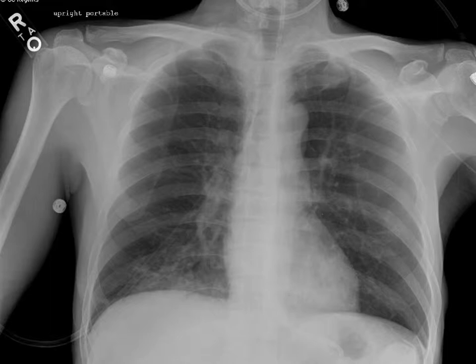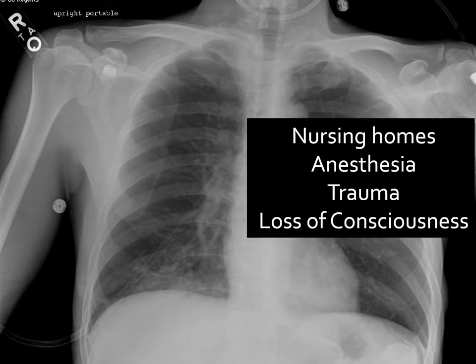Aspiration is where contents from the stomach or swallowed material ends up in the lung where it doesn't belong. It happens for patients in nursing homes, patients sedated with anesthesia, those in a traumatic accident, or who pass out. In this case, it goes with gravity — so it's in the lowest part of the right lung, showing that increased opacity.